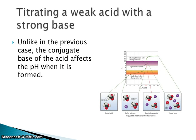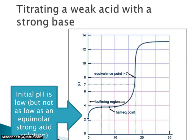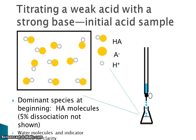That conjugate base is going to affect the pH at the equivalence point — it won't be at 7 in a weak acid-strong base titration. The weak acid is in the flask; the base is in the buret. Looking at the titration curve, the initial pH is low, but not as low as the pH of a strong acid solution of the same concentration. At the beginning, the dominant species will be HA molecules — less than 5% will have dissociated into H⁺ and A⁻.